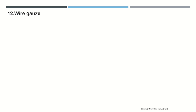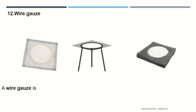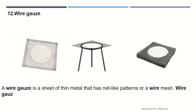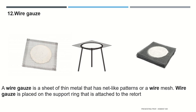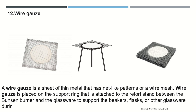Next is wire gauze. Wire gauze is a sheet of thin metal that has a net-like pattern or wire mesh. Wire gauze is placed on the support ring attached to the retort stand, between the Bunsen burner and the glassware, to support the beaker, flask, or other glassware during heating.